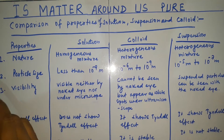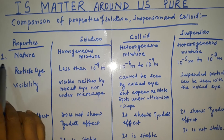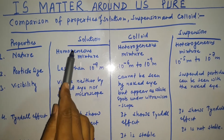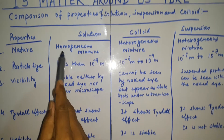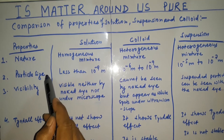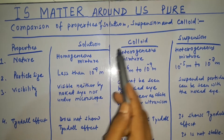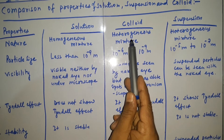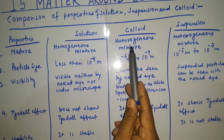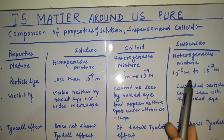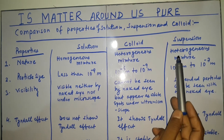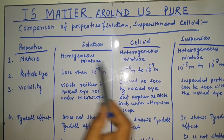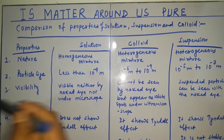First of all we will discuss about the nature of the mixture. Solution is homogeneous in nature. Colloid is heterogeneous — although it seems to be homogeneous, it is heterogeneous. And suspension is heterogeneous. This is about the nature of the mixture.